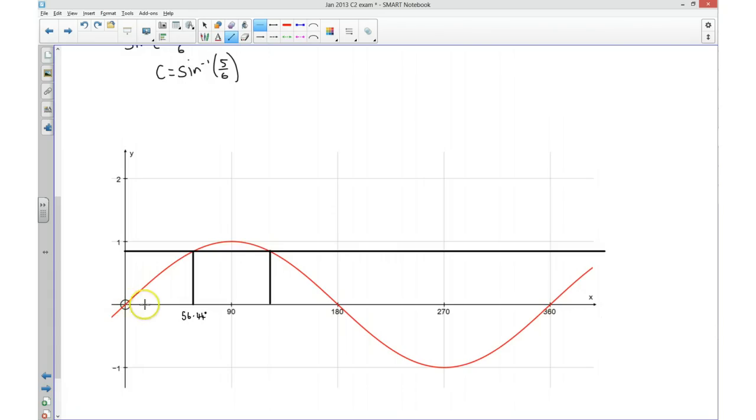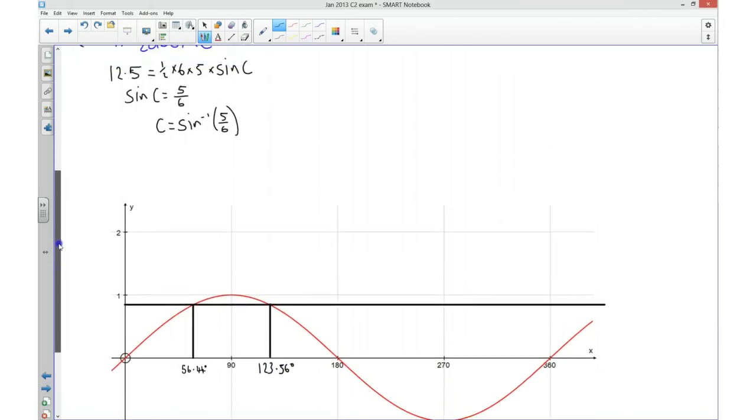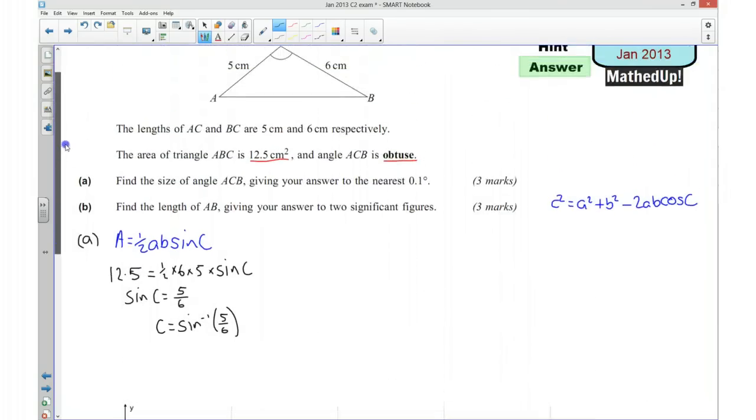Now here to here is 56.44 degrees and we've got a line of symmetry down here so here to here is also going to be 56.44 degrees. So I need to do 180 take away 56.44 degrees and then I'll know this angle here. So on my calculator if I do that I get 123.56 degrees. So to one decimal place that's going to be 123.6 degrees.